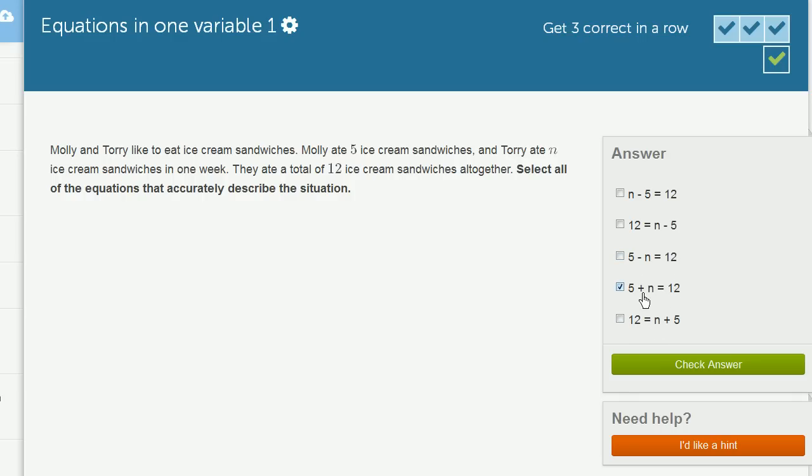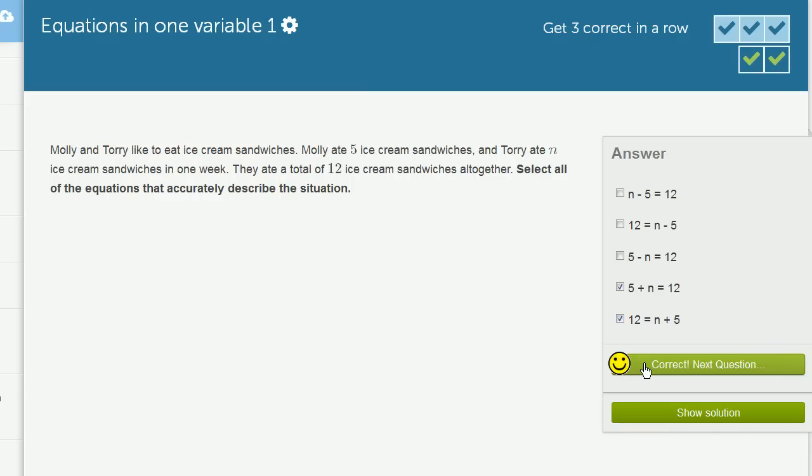And then finally, well, we know this is right. And then this right over here, N plus 5, we already know that 5 plus N is equal to 12. Well, it's a completely equivalent statement to say that 12 is equal to N plus 5. You're just swapping the left and right-hand sides of the equality. So let's check our answer. Let's do one more.